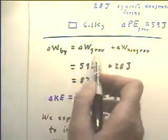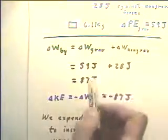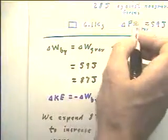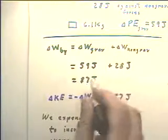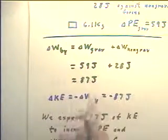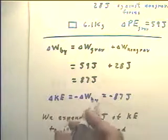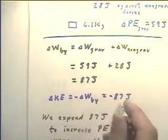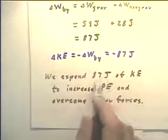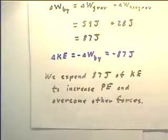In any case, the work done against gravitational forces — gravitation is a conservative force — is just your gravitational change in potential energy. That's 59 joules. We're told that the work against non-gravitational forces is 28 joules, which adds up to 87 joules. So the system does 87 joules of work. The kinetic energy change of the system is the negative of the work done by the system, which will be negative 87 joules. We can think of that intuitively by saying we expend 87 joules of kinetic energy in order to increase the potential energy and overcome other forces.